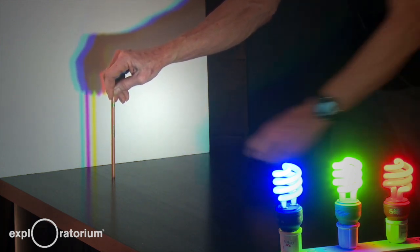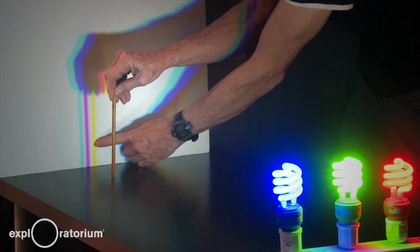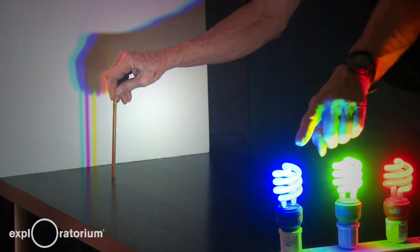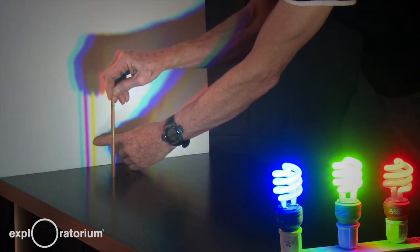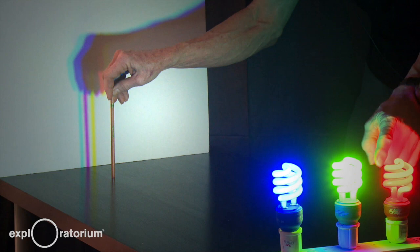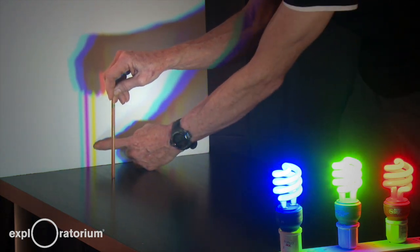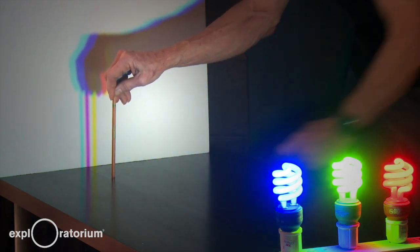On the other side here, where we see a yellow shadow, once again, light traveling from the blue light in a straight line to the wall is blocked right there by the pencil. But the red and the green bulbs are in different positions, so their light can fill in that shadow and make yellow light.